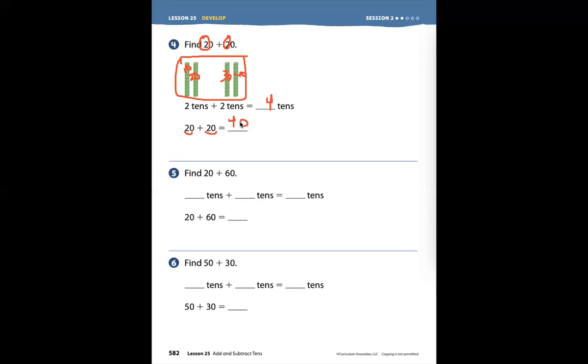Let's do another problem. Problem number five, find 20 plus 60. We can put our numbers into place value charts. These are my tens, and these are my ones. It says find 20 plus 60. So I'm going to put 20 here, and I'm going to put 60 here. So I have 20 and 60. I know, and I can see that I have zero ones.